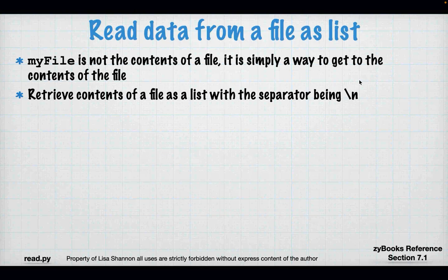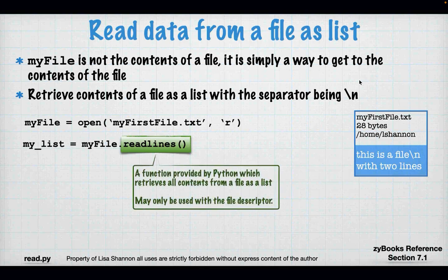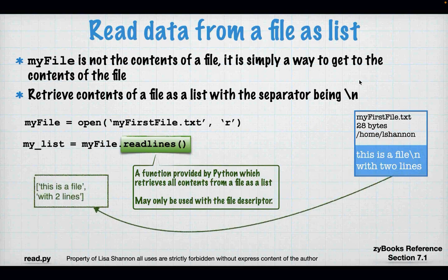Maybe you want to read a file as a list, with the list separator being the newline character. You do pretty much the same thing — open it for reading — but instead of calling read(), you call readlines(). Readlines will give you another element in the list for every new line. So if you have a lab that says read it in as a list, or if you've stored things in a file separated by new lines and need to get them back as a list, this is the way to do it. Readlines just does it for you. And close the file.